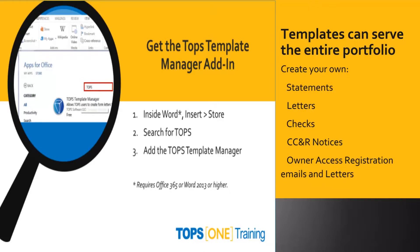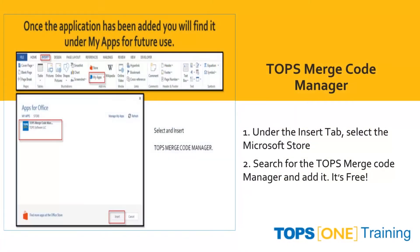Opening Microsoft Word — either Office 365 or Word 2013 or higher — will give you access to the Microsoft Office Store, where you can search for the TOPS Template Manager and Merge Code information, which can be added as a free add-in. Once the application has been added in Microsoft Word, you will find it under your apps for future use.